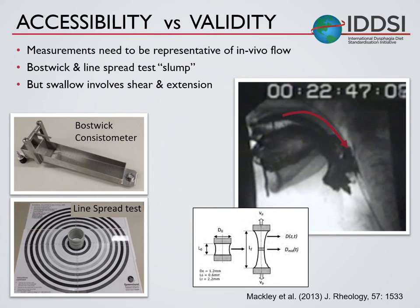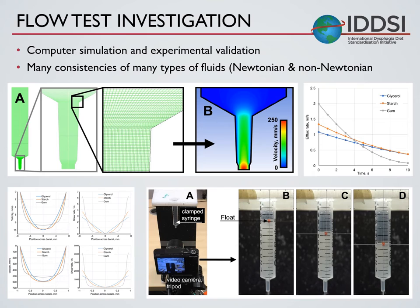We use particle tracking software and pressure sensors to capture the relationship between pressure and flow. To make use of this lab-based research, it's important to have a measurement that can be used in the real world. Some researchers have used a Bostwick consistometer or a line spread test to test consistency, and this is used in some food industries. But these tests measure how a material slumps, whereas swallowing involves fast shear flows and extension of the bolus. So it's important that the measurement captures fast flow. After researching several different methods, we settled on measuring flow through a funnel, using a 10 millilitre syringe.